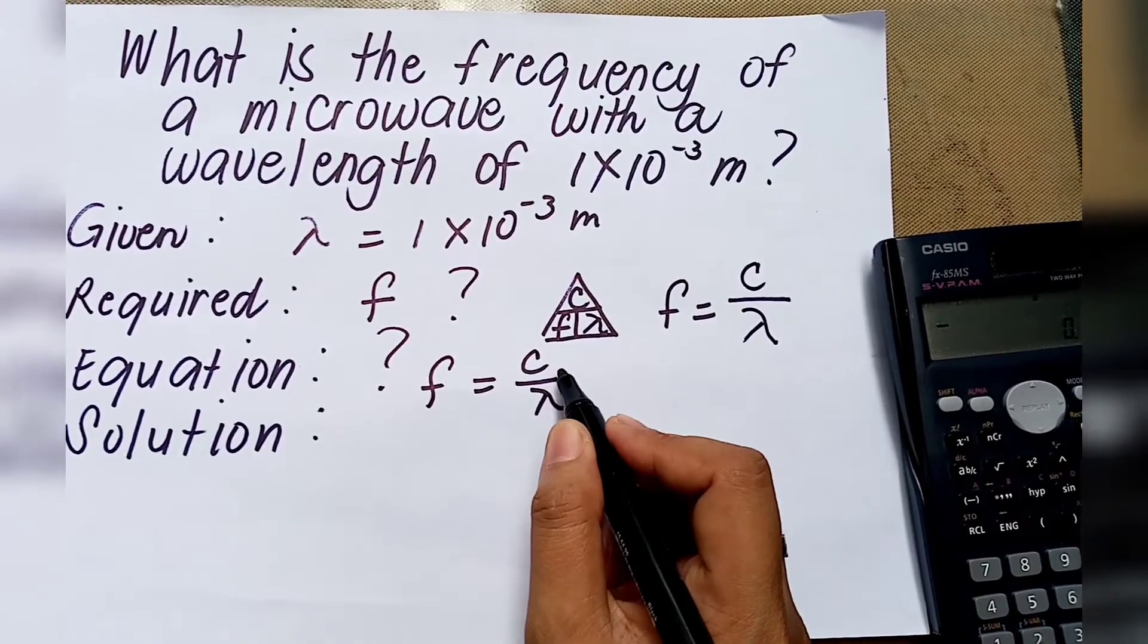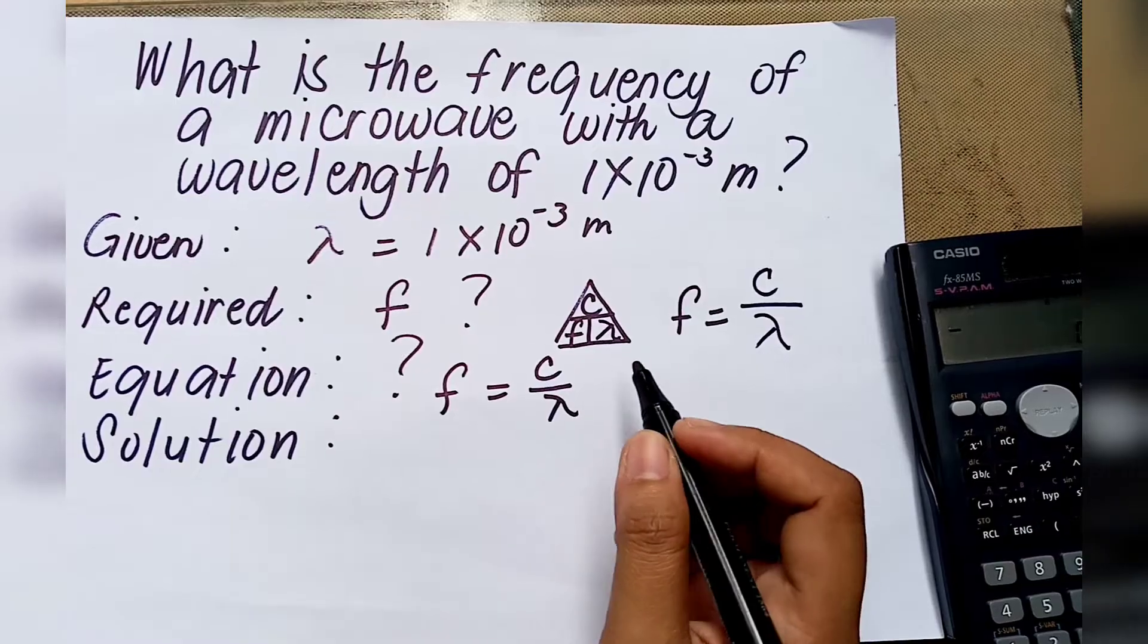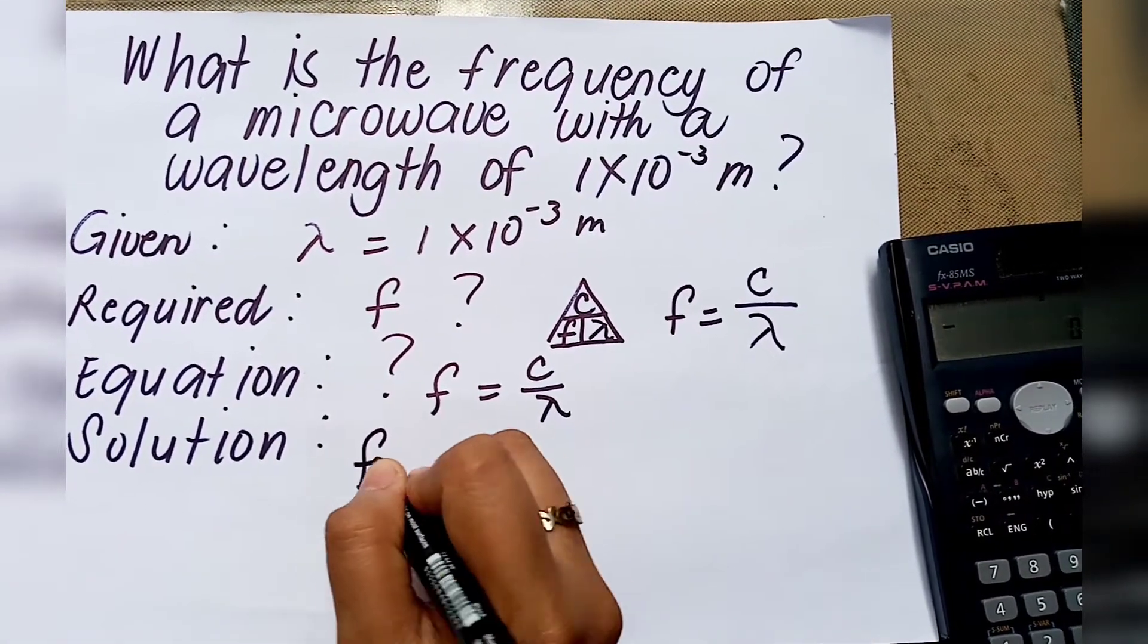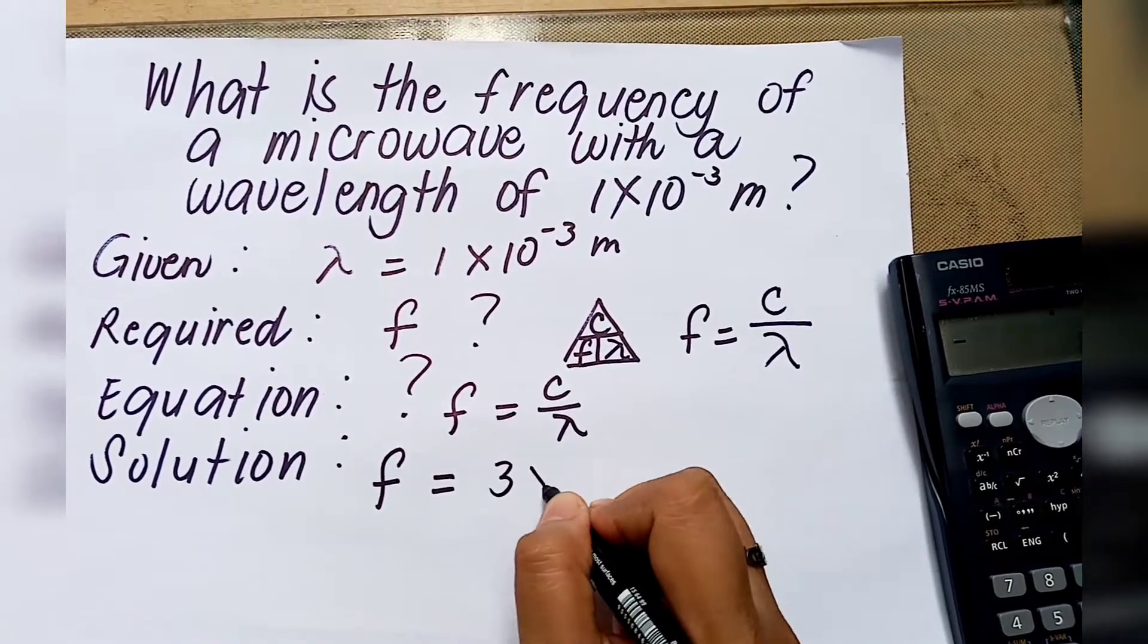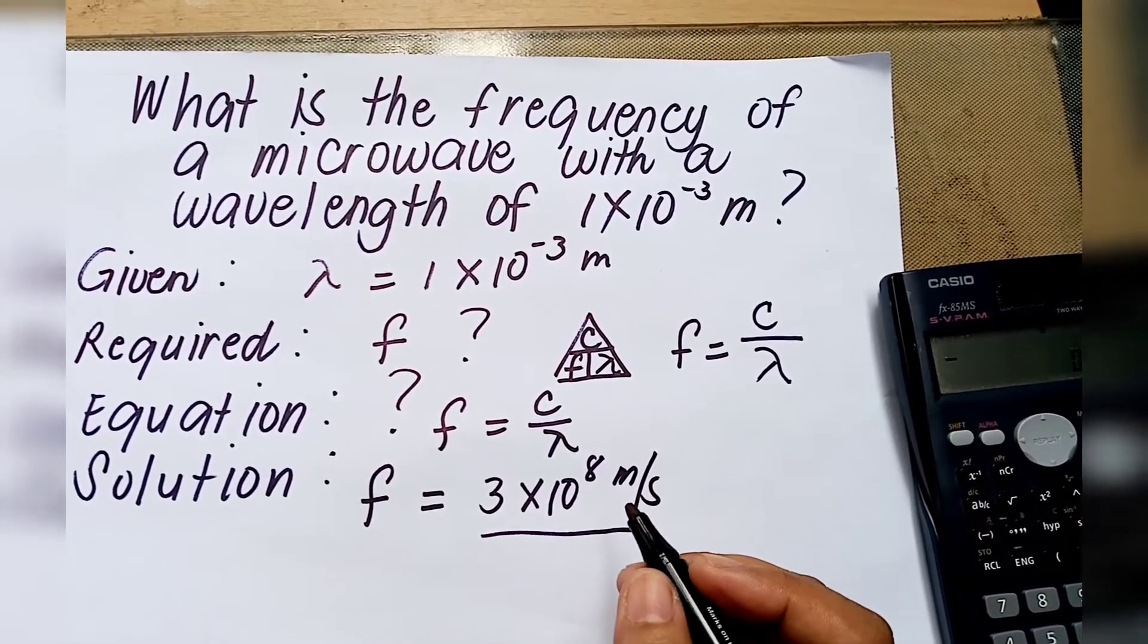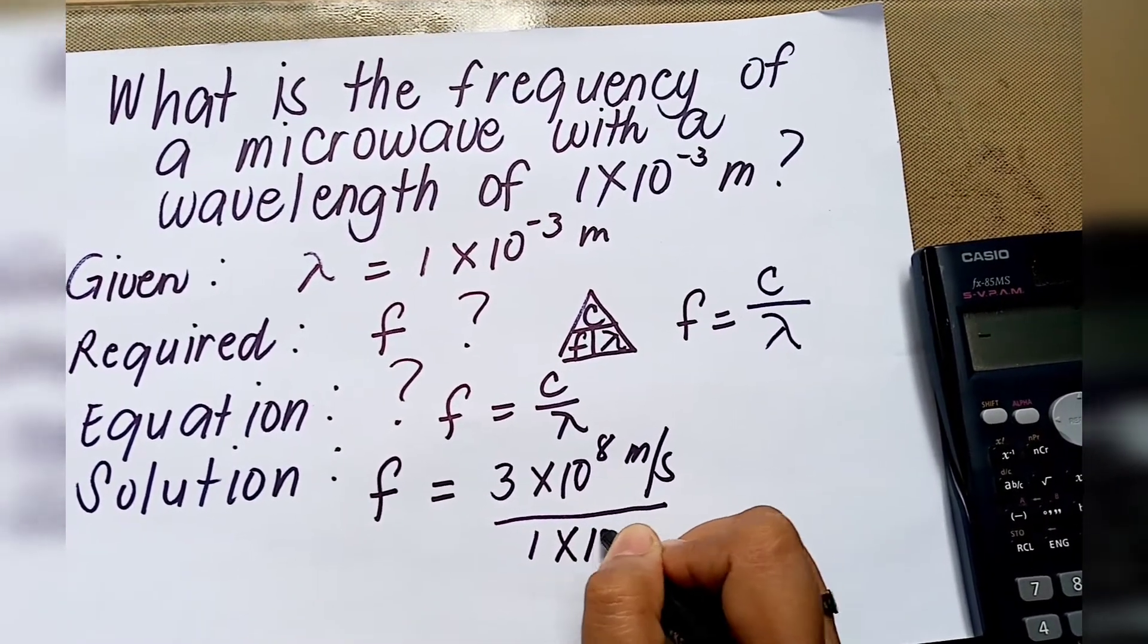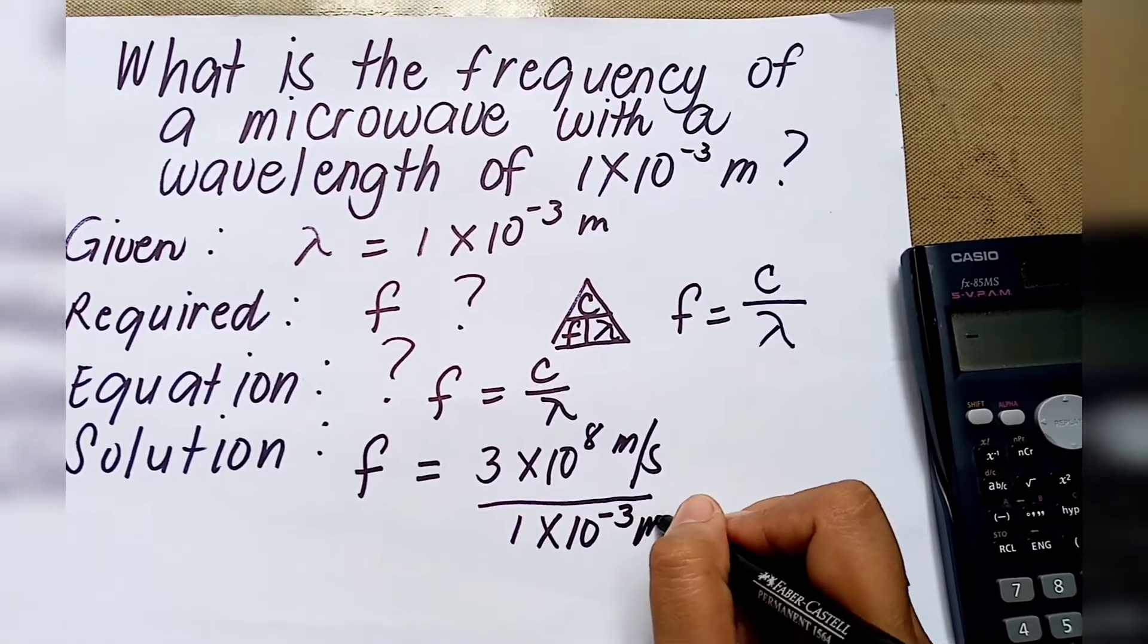Speed of the EM wave is equivalent to 3 times 10 to the 8 meter per second. Let us proceed with the solution. Frequency is equal to 3 times 10 to the 8 meter per second divided by the wavelength, which is 1 times 10 to the negative 3 meter.